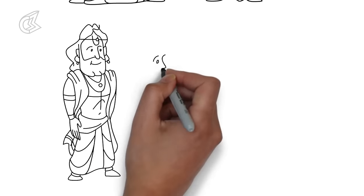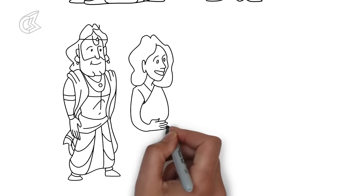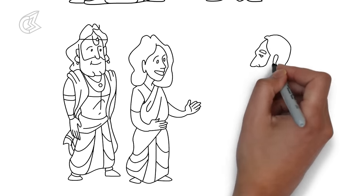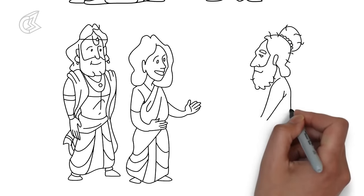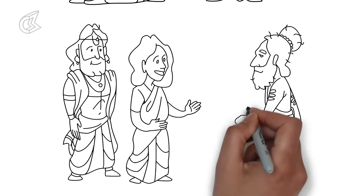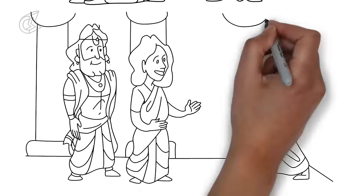Vyas came when Satyavati called upon him. She asked him to father the children of Ambika and Ambalika. Bhishma was relieved at the thought that the throne of Hastinapur will not go empty.